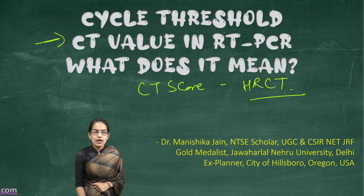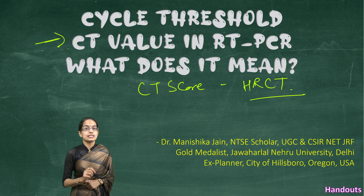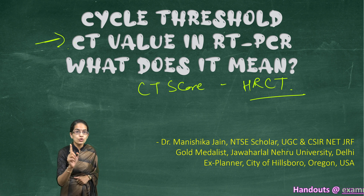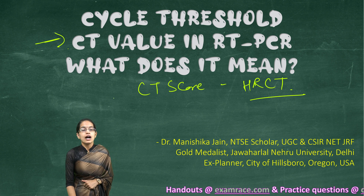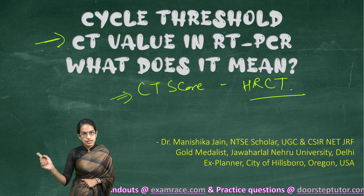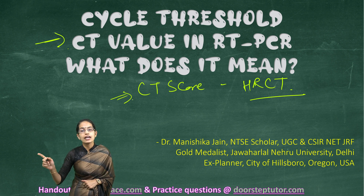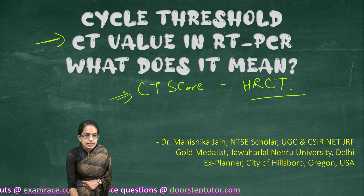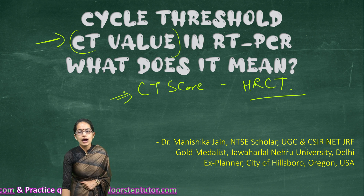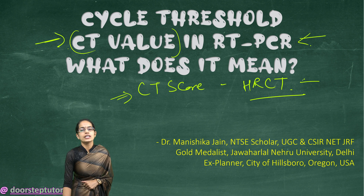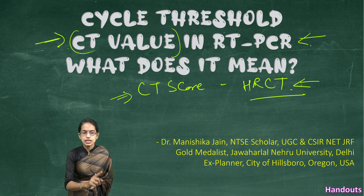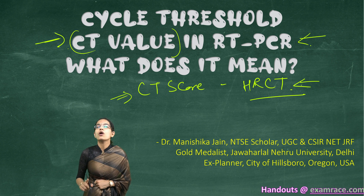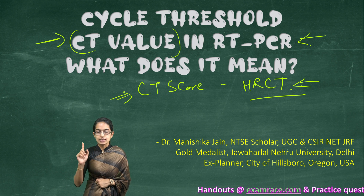A higher CT value in a RT-PCR test indicates lower proportion or lower viral load. However, a higher CT score in a HR-CT test indicates higher viral load. So in case of a CT value from RT-PCR, it works inversely. However, it works directly — or is directly proportional to the viral load — in case of CT score from a HR-CT test.